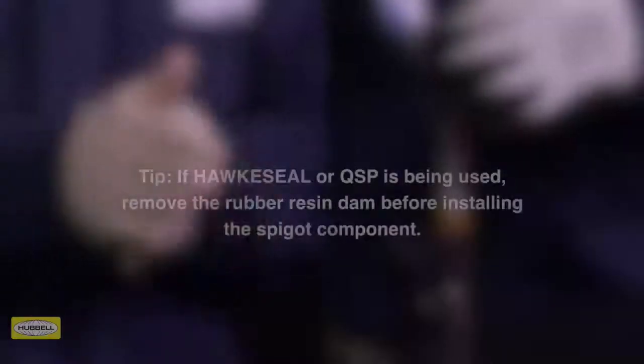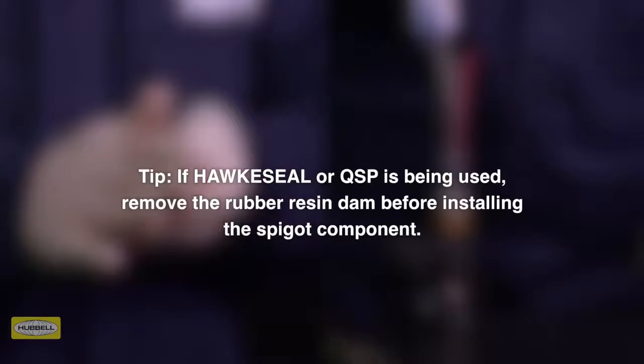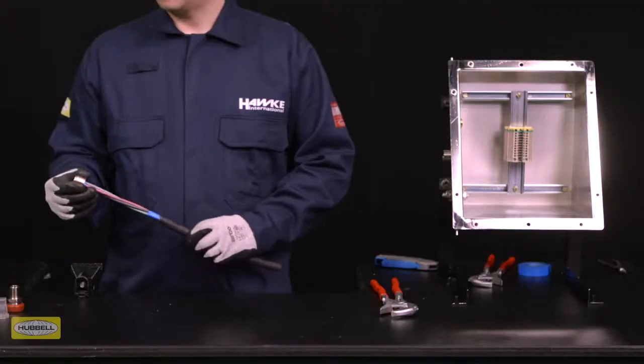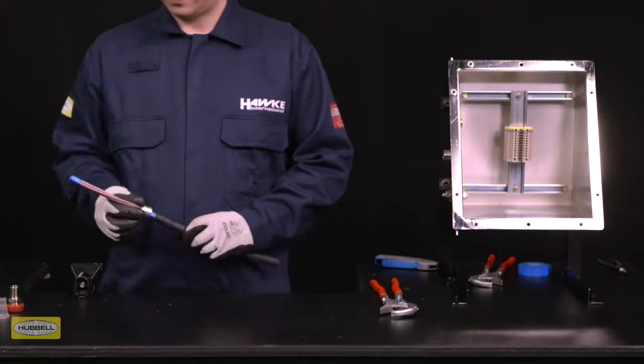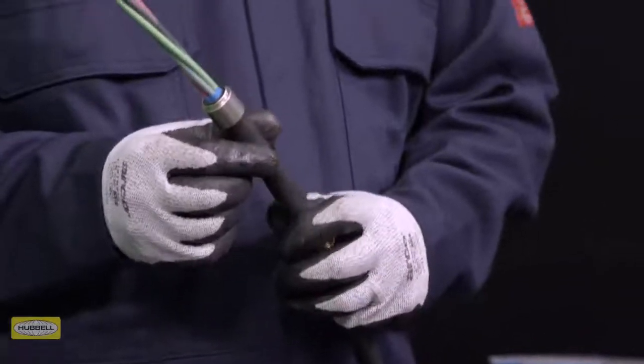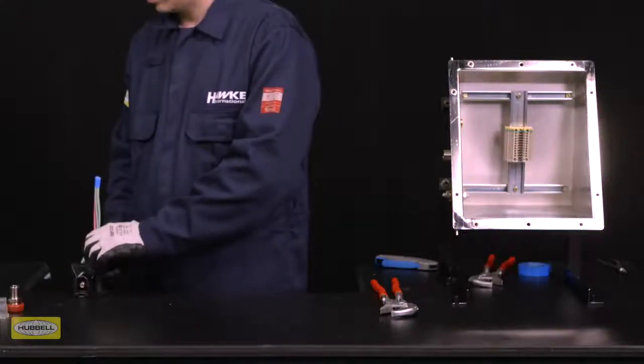If Hawk Seal or QSP is being used, remove the rubber resin dam before installing the spigot components. Slide the spigot over the cable, taking care not to damage the rubber resin dam, until the rear end of the spigot is at the point where the inner sheath is stripped back. Fit the pot and check that the inner sheath is at the height of the pot shoulder.